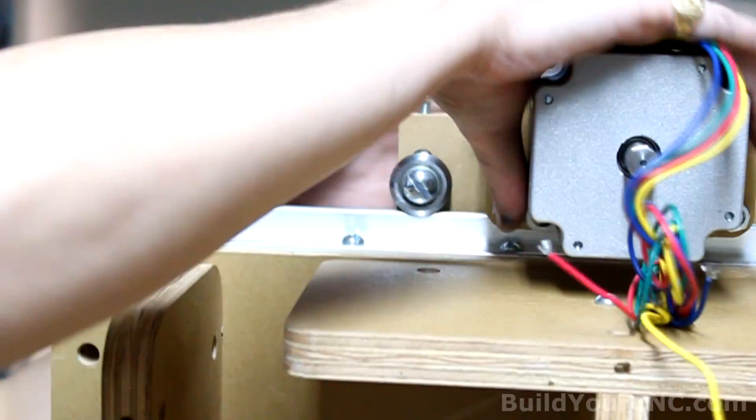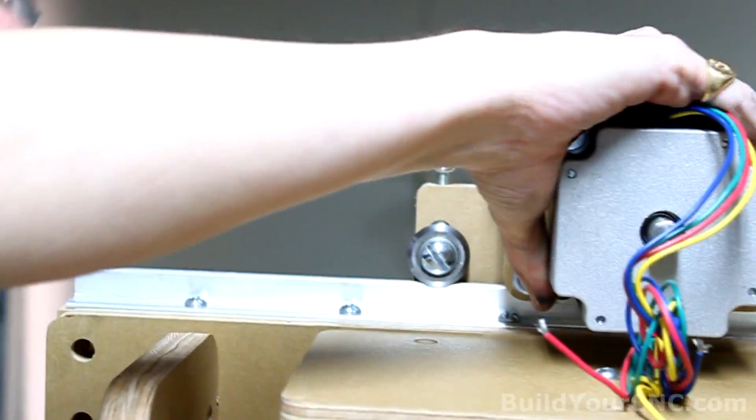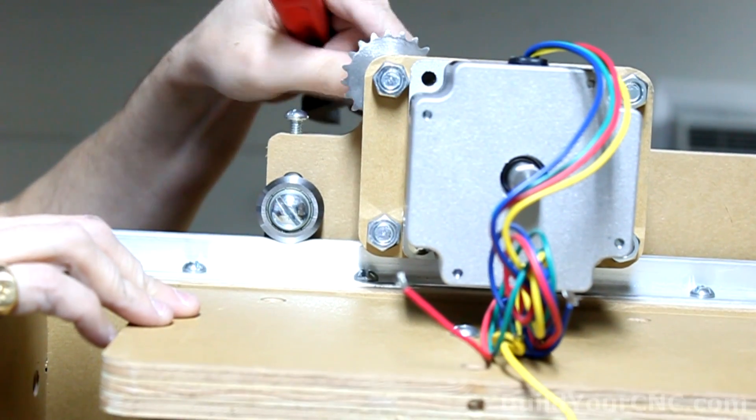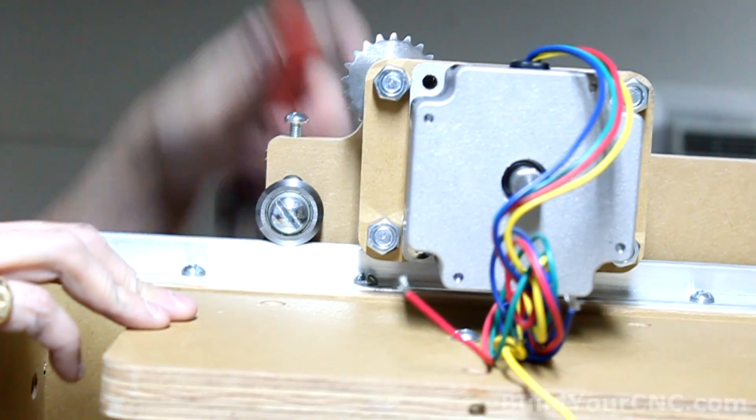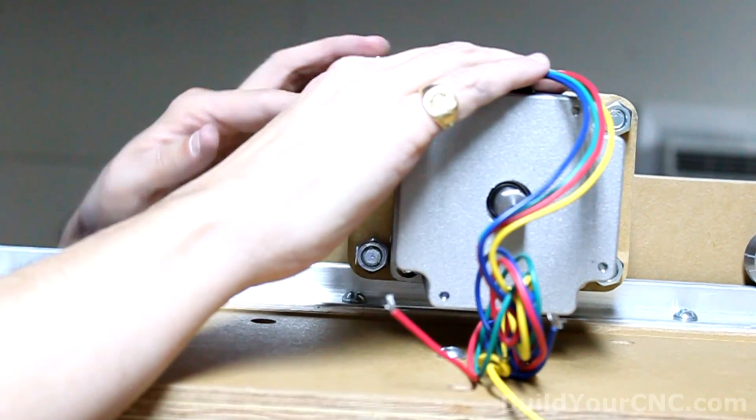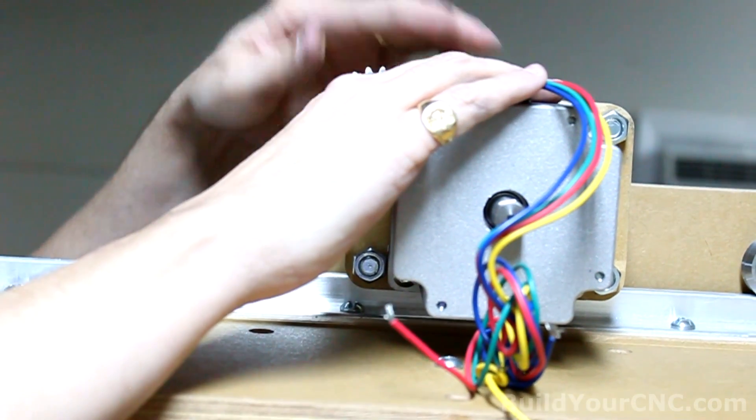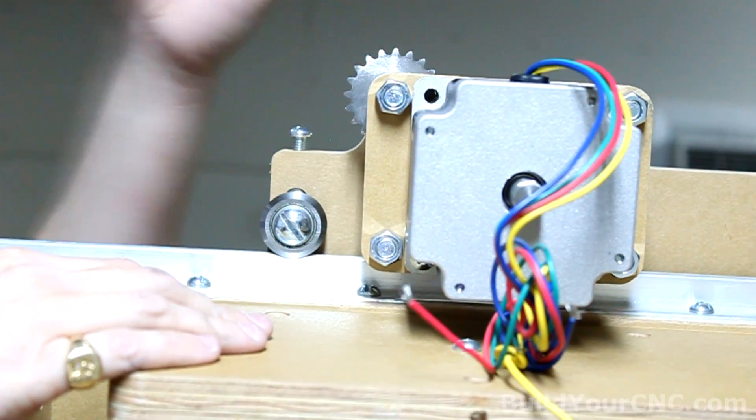Just tighten up the screws. This will not go anywhere. It's very strong. Now we're going to omit the nut that's holding against the idler sprocket because it covers the race. It doesn't allow it to spin, so keeping it free flowing like this is fine.